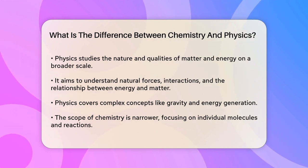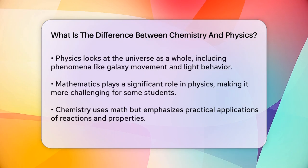One key difference is the scope of study. Chemistry focuses on individual molecules and chemical reactions, while physics looks at the universe in its entirety. For example, in chemistry, you might study how different substances react with each other to form new compounds.